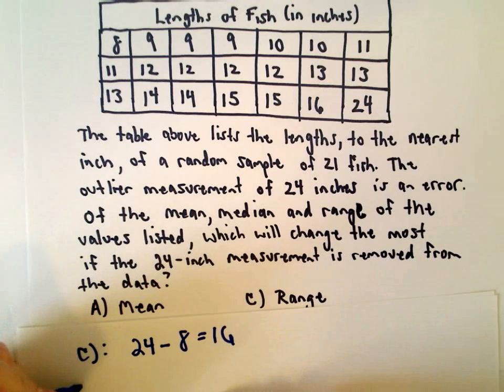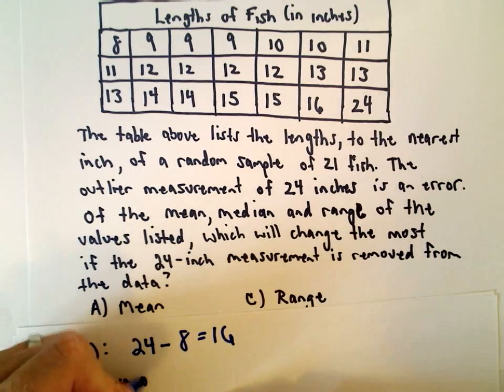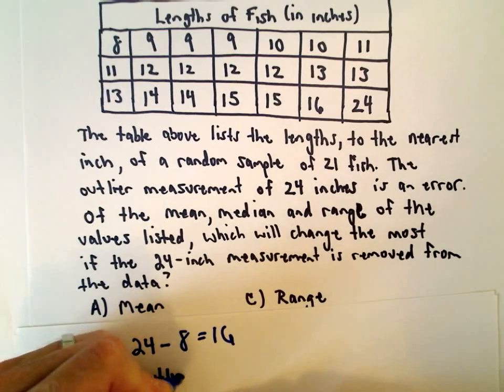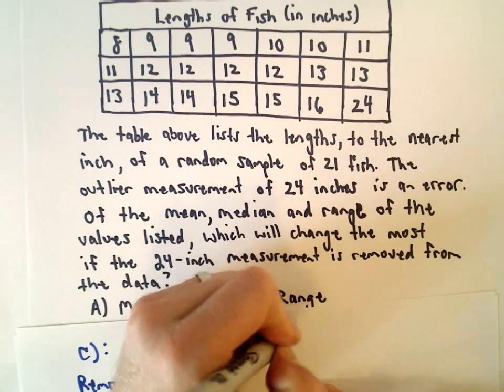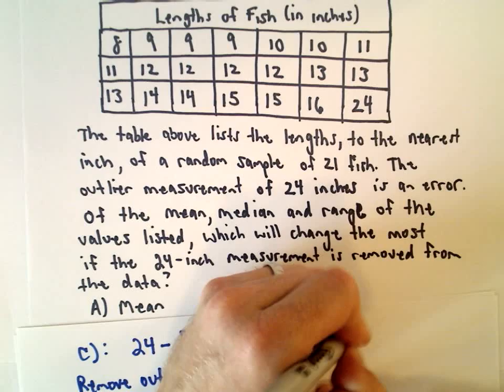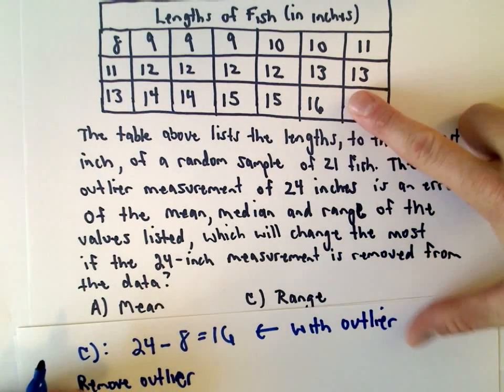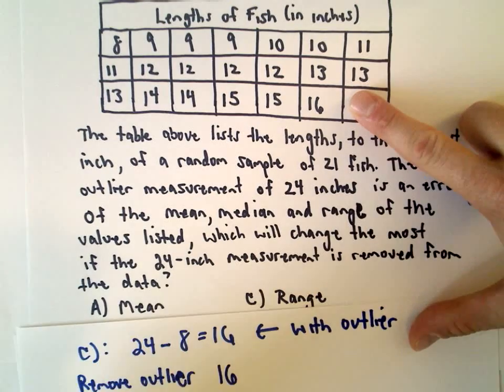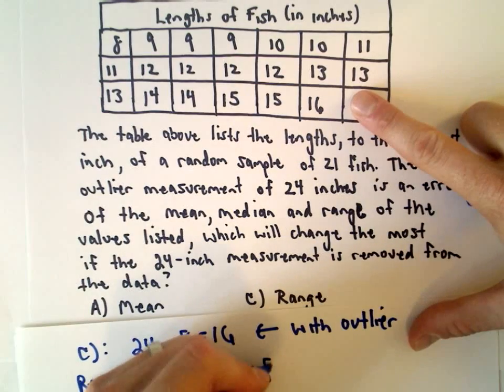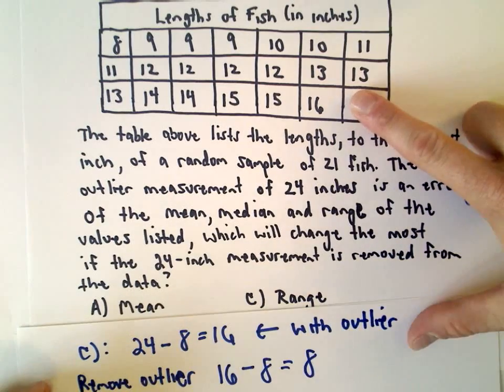Once you get rid of the outlier, once we remove the outlier - this is with that large measurement - once we remove the outlier, the largest value then would be 16. If we subtract away the smallest measurement which is 8, that gives us a value of 8.